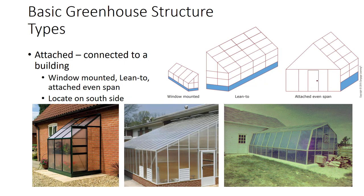The three basic types of greenhouses are attached, detached or freestanding, and connected. Attached greenhouses are attached to an existing structure. The three basic styles include window-mounted, lean-to, and attached even-span.